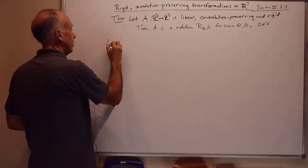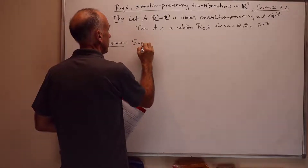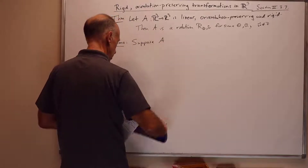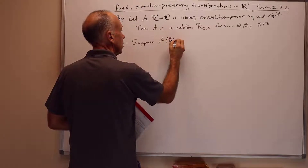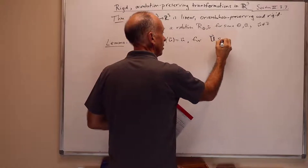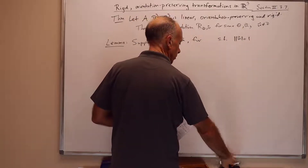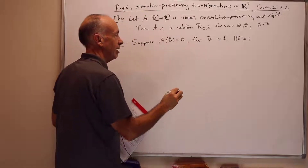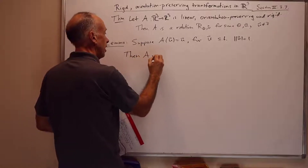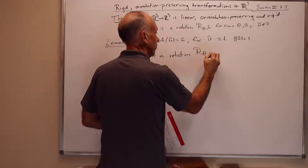We're going to first prove a lemma, and then prove the theorem. The lemma is: suppose A of u equals u for some u such that the length of u is 1 — so u lies on the unit sphere around the origin. Then A is a rotation R_theta_u for some theta.